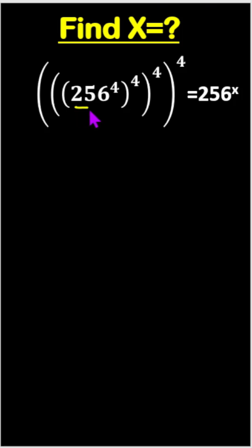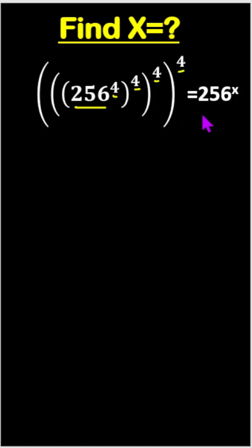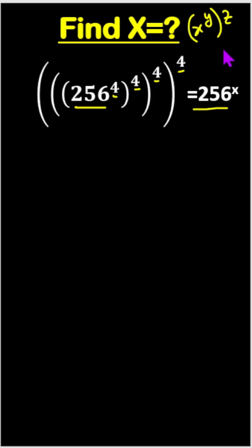Find x: 256 to the power 4 to the power 4 to the power 4 to the power 4 equals 256 to the power x. We know x to the power y to the power z, we can write x to the power y times z.